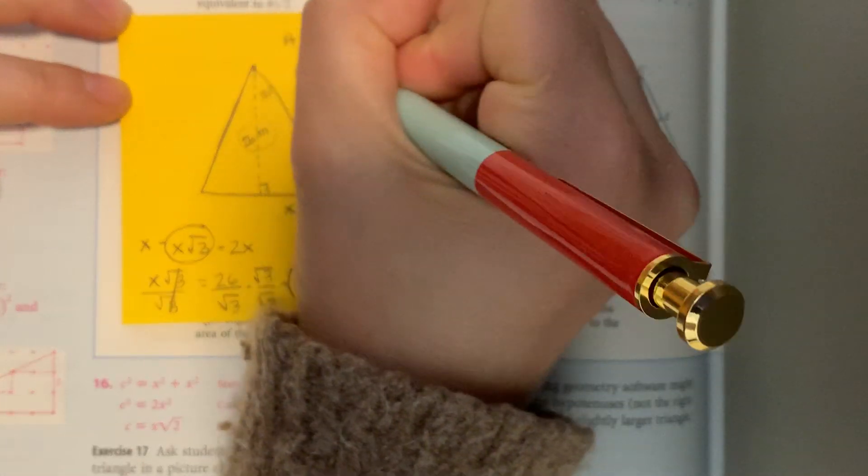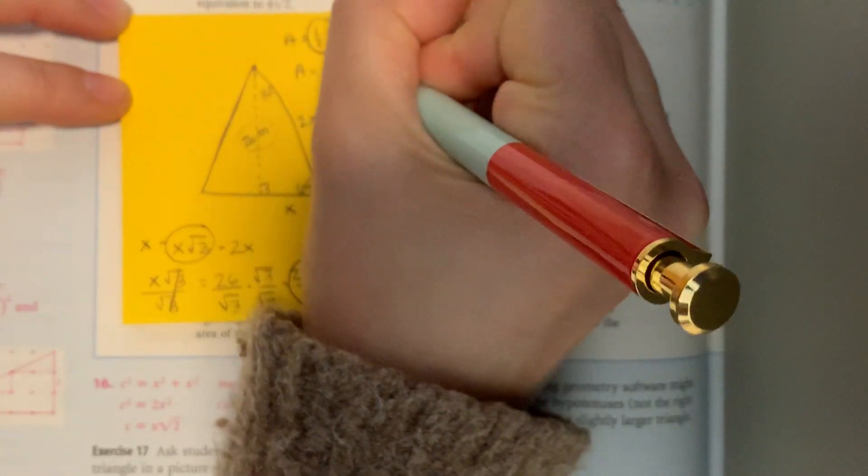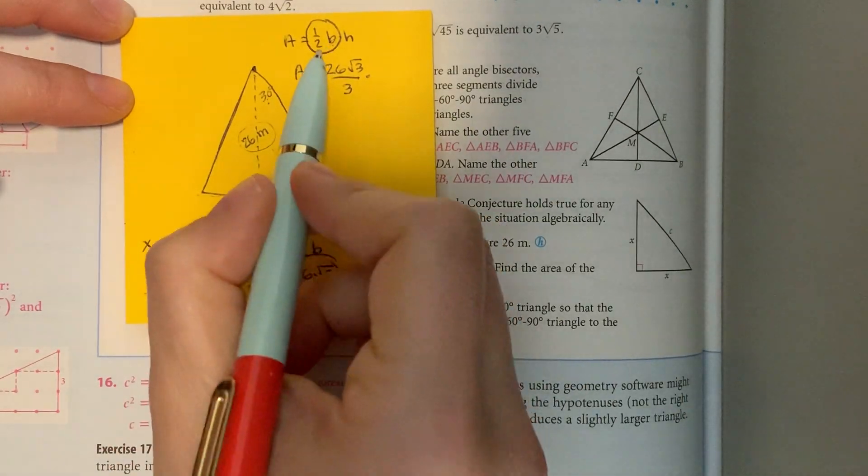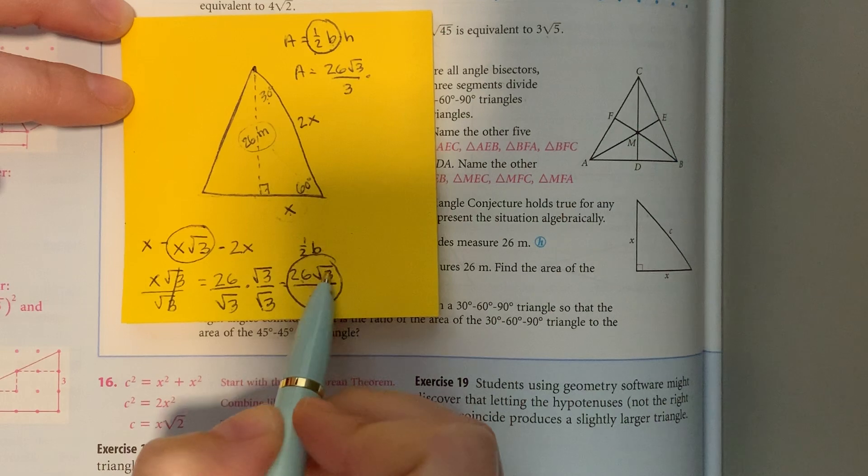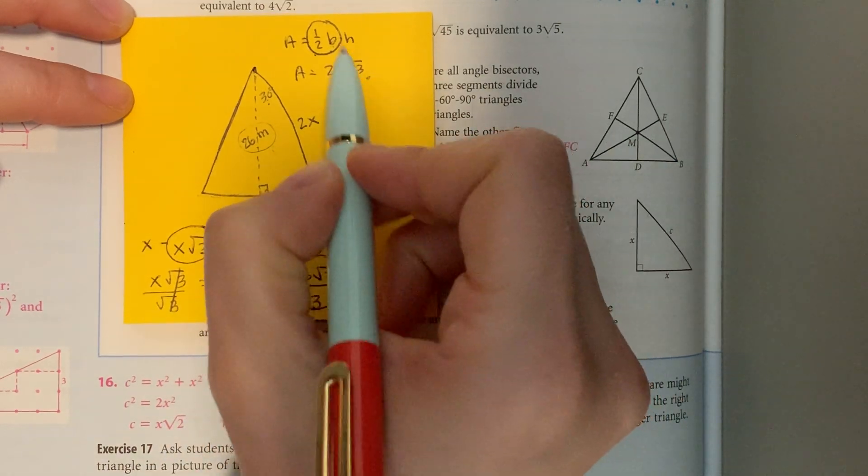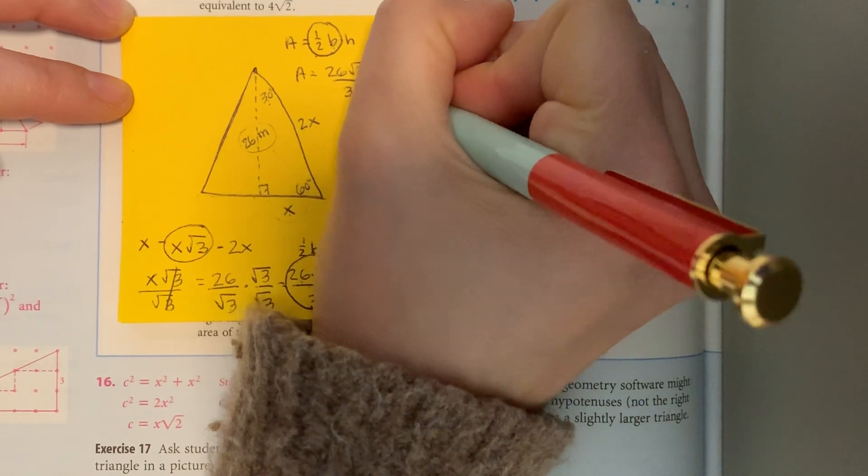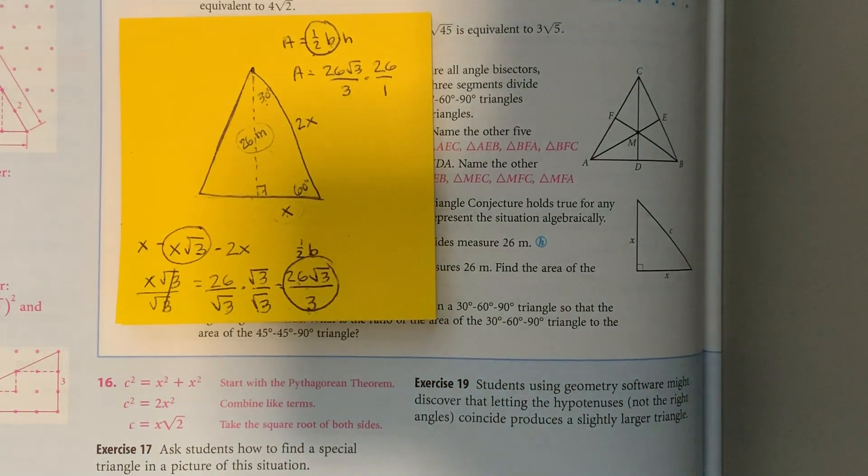Area equals 26 square root of 3 over 3, which is half the base, times the height, which is 26. Now it's time to use the calculator.